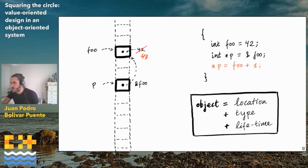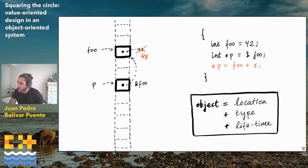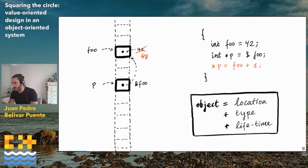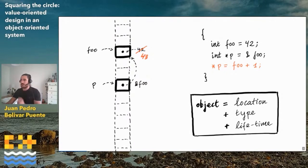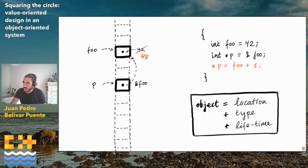In C++, the fundamental entity we use to program is this notion of object, which is the combination of a location with a type and a lifetime. A location in memory, the type that determines what kind of values I can put in it and what operations are supported, and a lifetime that determines when this object is valid — when this region of memory is associated to this object, automatically determined in the case above by the braces.